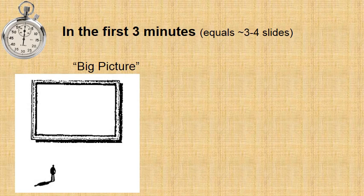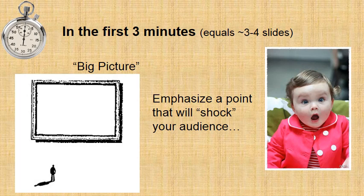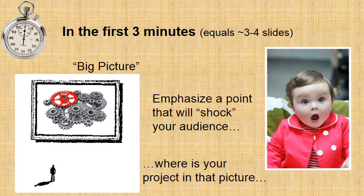In the first three minutes, which may equal three to four slides, you should show the big picture to your audience. Show why the research in your field matters. If you work in Alzheimer's disease, that's not such a big problem because Alzheimer's is also a social problem. For other fields, this may be challenging. You should also emphasize a point that will shock your audience. In that way, they will be attached to hear more about your research. For example, in the Alzheimer field, you can emphasize that the US alone is spending 200 billion dollars giving care to Alzheimer's patients. Moreover, you have to put your project in the context of the big picture, so your audience gets the importance of your findings and how they affect the big picture.